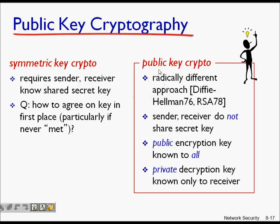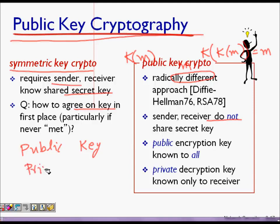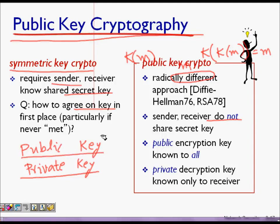A new kind of cryptography was introduced — public key cryptography. Here the sender and the receiver don't share a secret key. Instead, there is a public key and a private key. The private key is known only to the person themselves.